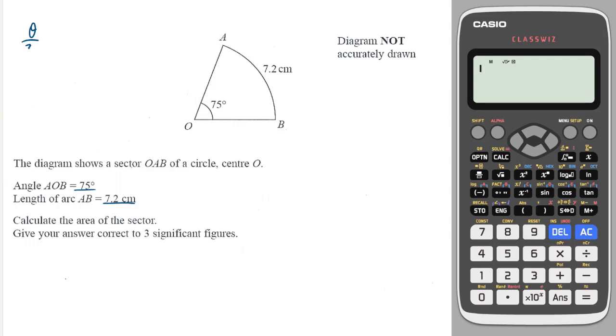Which is the angle over 360 multiplied by 2πr is equal to the arc length. So in this instance we have 75 over 360 multiplied by 2πr is equal to 7.2. So to work out r we need to reverse this. So we need to do 7.2 divided by 75 over 360 times by 2π.